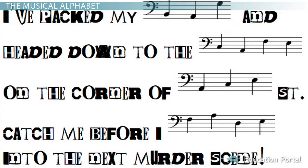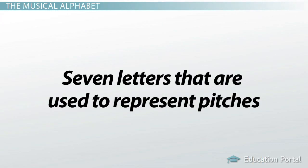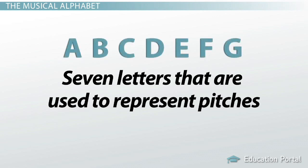The first step in solving the ransom note is knowing which pitches exist in the musical alphabet. In our current music system, there are seven letters that are used to represent pitches. These letters are A, B, C, D, E, F, and G.